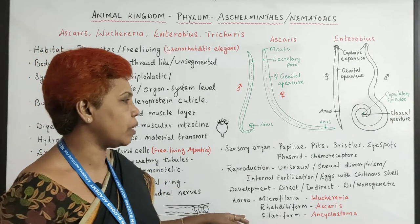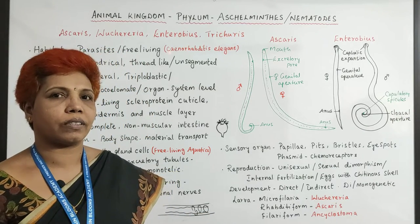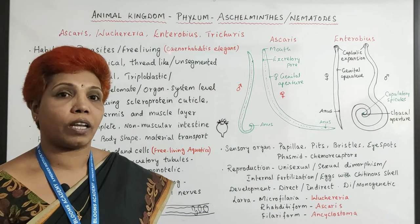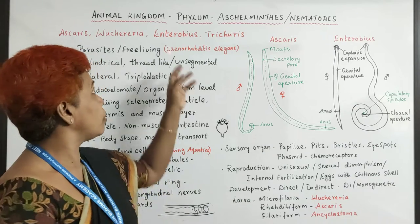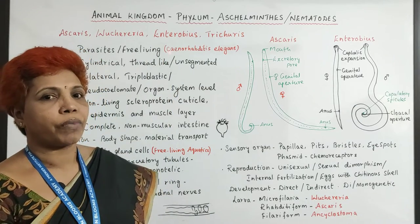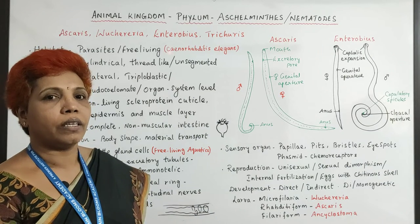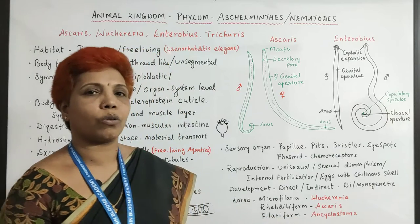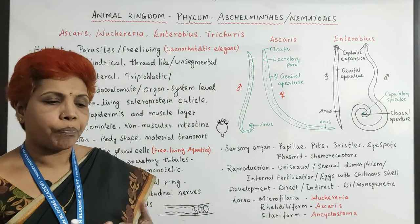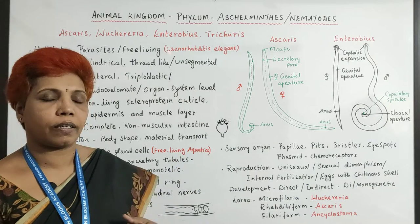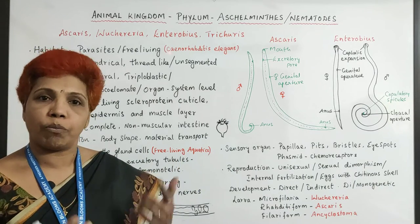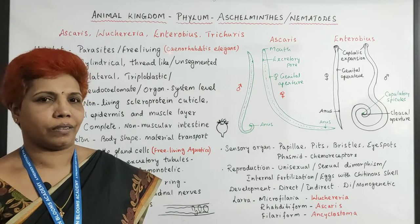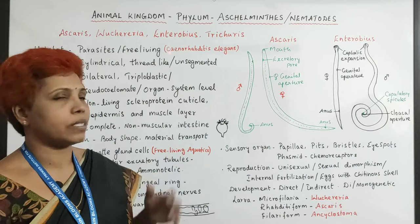Development is either direct or indirect. Larval stages differ in different forms — for example, microfilariae larvae from Wuchereria bancrofti cause filariasis or elephantiasis; Ascaris lumbricoides has rhabditiform larvae; and Ancylostoma has filariform larvae. Some species complete their life cycle within one host (monogenetic) while others require two hosts (digenetic).